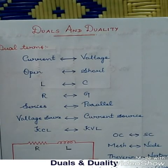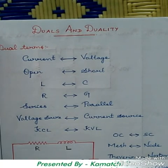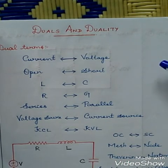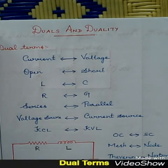In today's topic we can see how to find the dual of a network. The topic is duals and duality. While converting a network into its equivalent dual network, all the elements in a network have to be converted into their equivalent dual form.